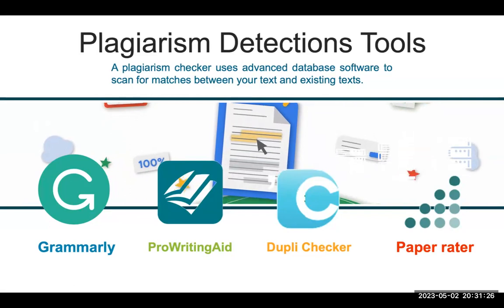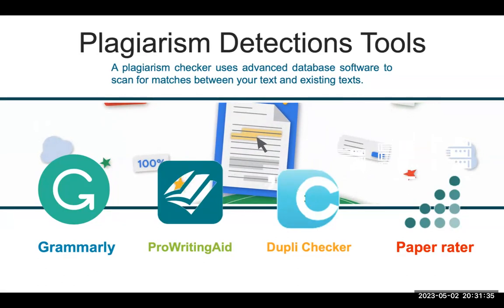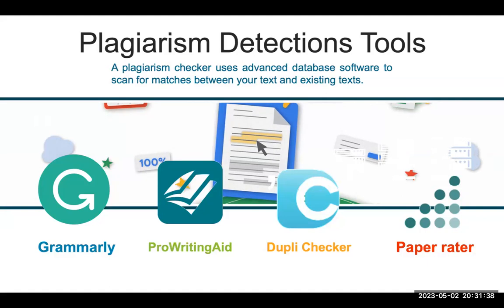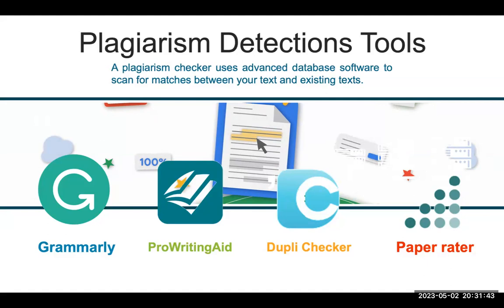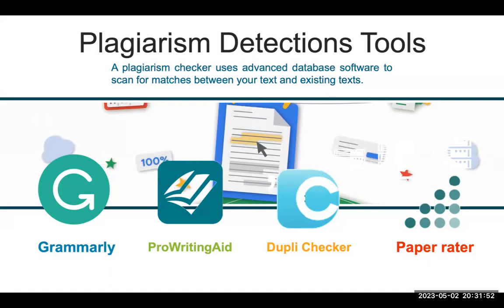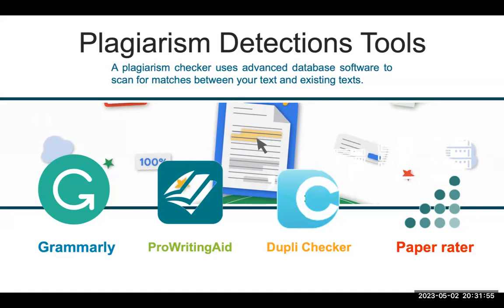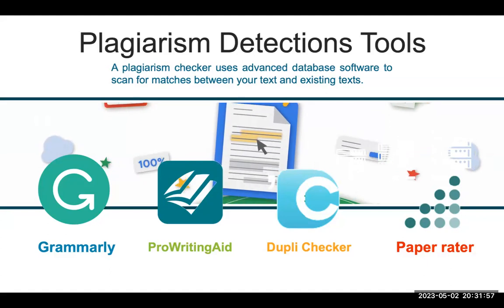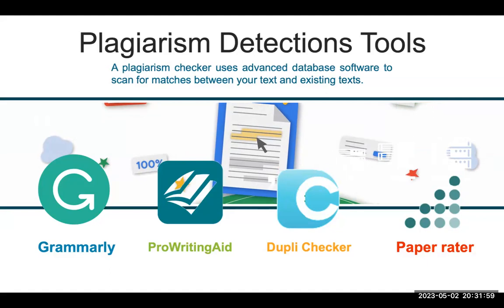I would suggest you go and check all these different software options. First install their basic versions, and whichever software feels most suitable for you, go ahead and purchase it. They're not offering very high prices — Grammarly for students was around five dollars monthly — and similarly the rest of the software is not very expensive, so you can try their advanced versions as well.